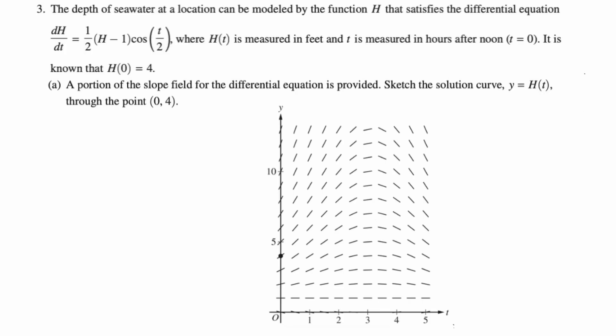For part a, a portion of the slope field for the differential equation is provided. Sketch the solution curve y equals h of t through the point zero four. So this is like you're just dropping into flowing water and you follow along. So zero four is where we should start. You can see it's marked on the grid.